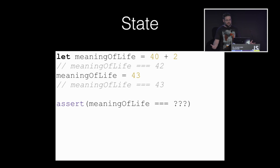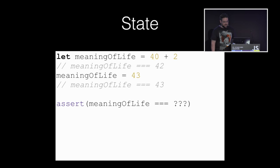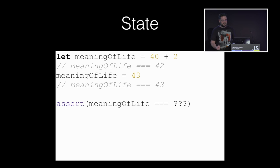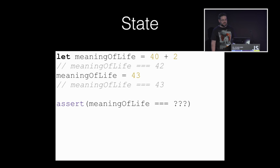Now we have a problem: the meaning of life has changed. Because it has different values over time as the program executes, the state of the identifier has mutated — the program is now stateful. Unless you step through it in a debugger, you cannot inspect the runtime state of the identifier before it was changed; you can only test the most recent state. State complects values with time; you don't have the ability to get a value independent of time. State is complex because it is complecting the software at a fundamental level.